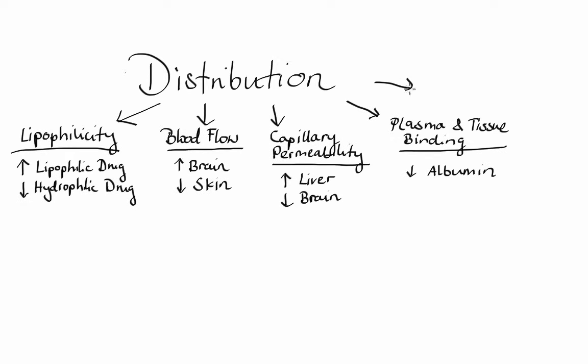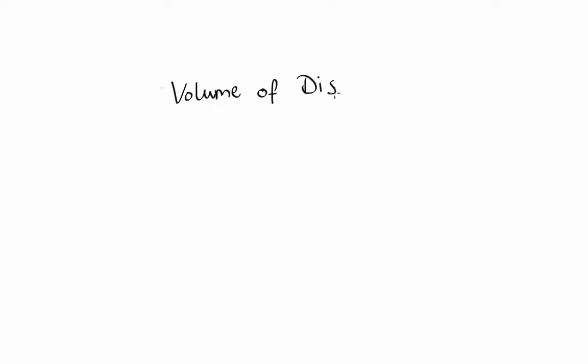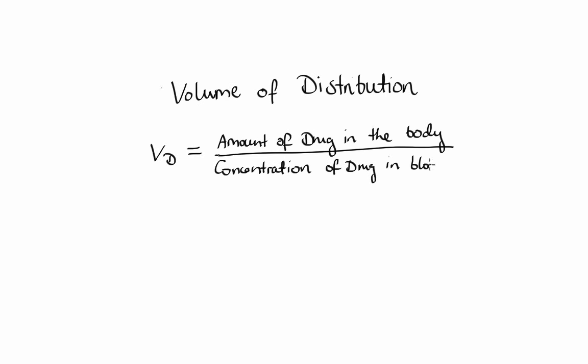Finally, we need to factor in the volume of distribution, which is theoretical volume that the drug would have to occupy in order to produce the concentration that's present in blood plasma. Volume of distribution can be calculated by taking amount of drug in the body and dividing it by concentration of drug in blood plasma. For example, high molecular weight drugs tend to be extensively protein-bound and don't pass through capillaries as easy as smaller molecules, thus they have higher concentration in blood plasma and lower volume of distribution. Typically, opposite is true for lower molecular weight drugs, especially the lipophilic ones, which will distribute extensively into tissues and will result in larger volume of distribution.